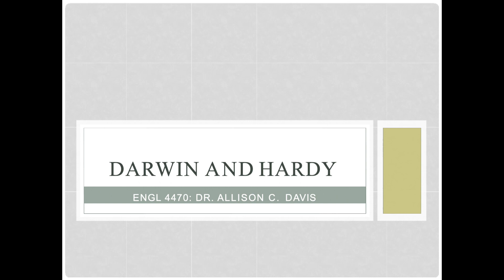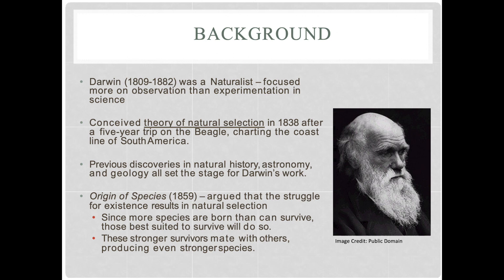Let's begin with a little bit of background on Charles Darwin. Darwin was a naturalist, a type of scientist that focused more on observation than experimentation. He conceived of the theory of natural selection, which is what we're going to be looking at for our purposes in talking about literature. This theory he came up with in 1838 after a five-year trip on the ship the Beagle, which charted the coastline of South America.